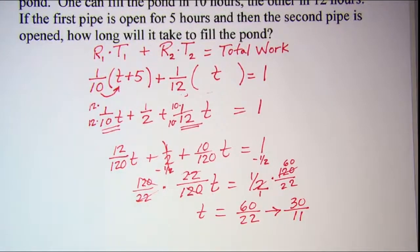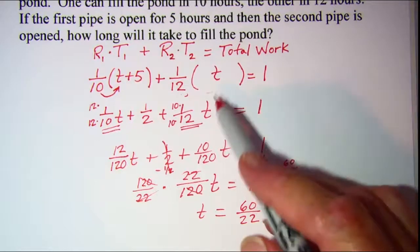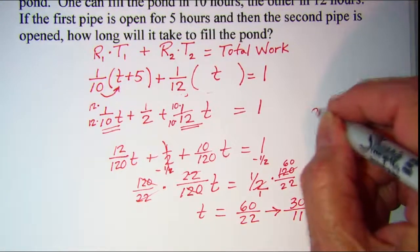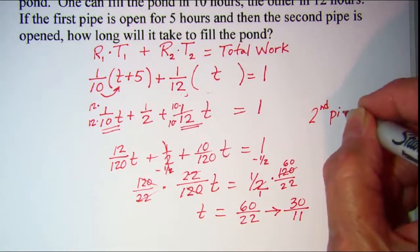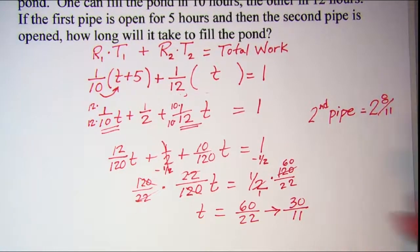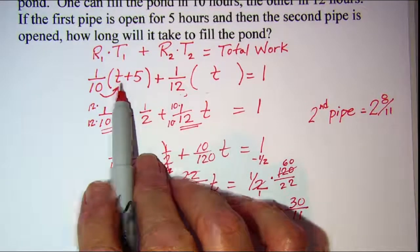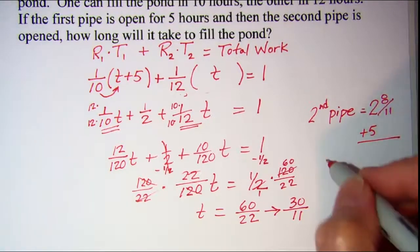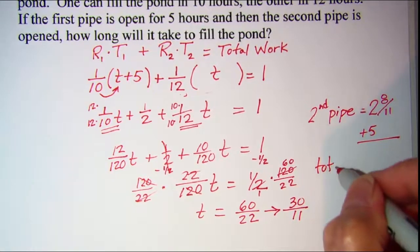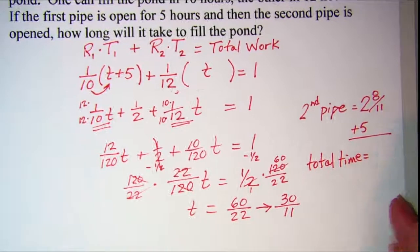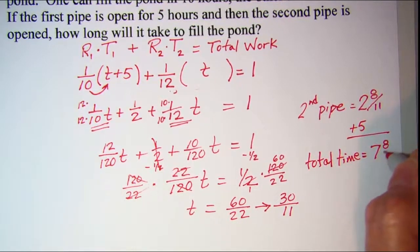So the time for the second pipe is 2 and 8 elevenths. So to find the time for the first pipe, I need to add 5. The total time is 7 and 8 elevenths hours.